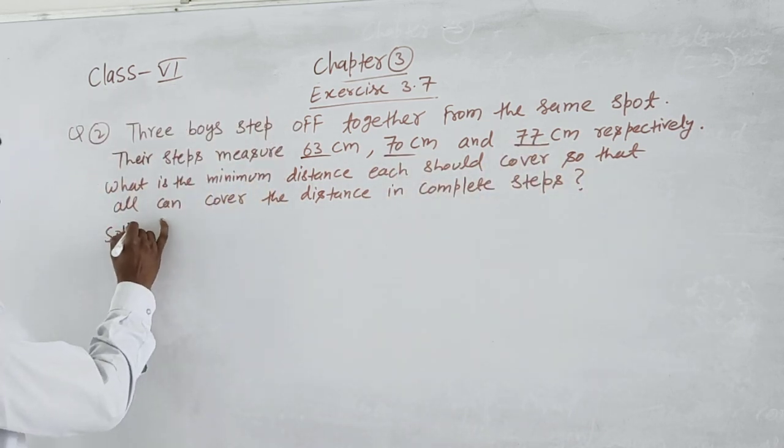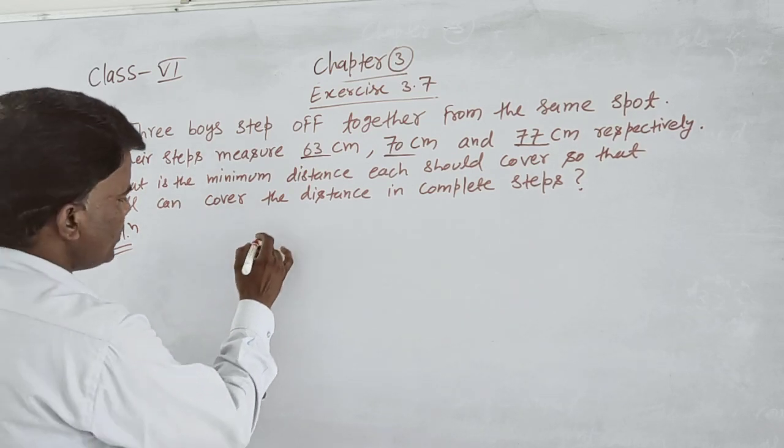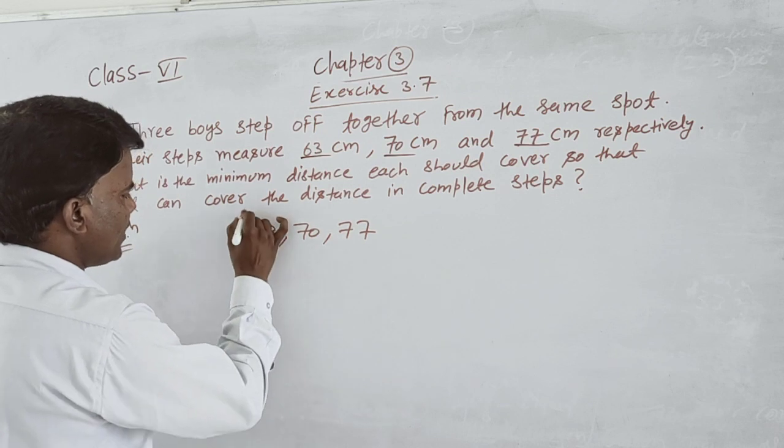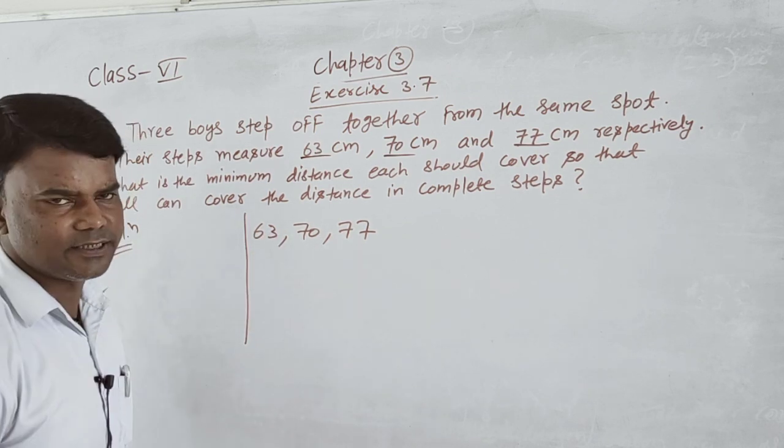The numbers are 63, 70, 77. Now let me show you how we can find it. We are going to write it down.